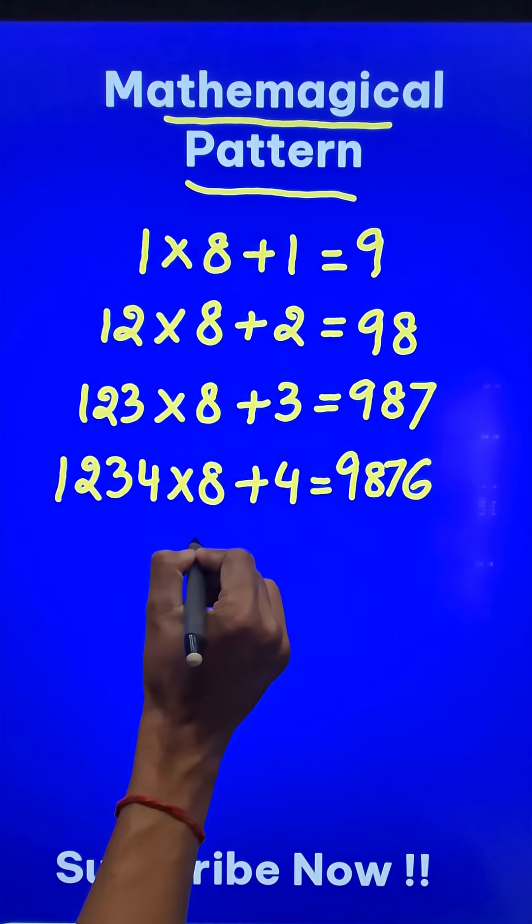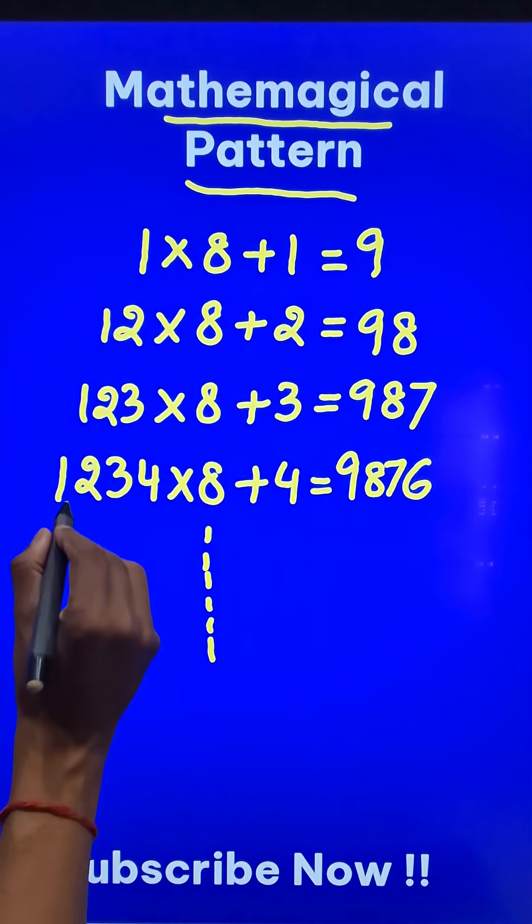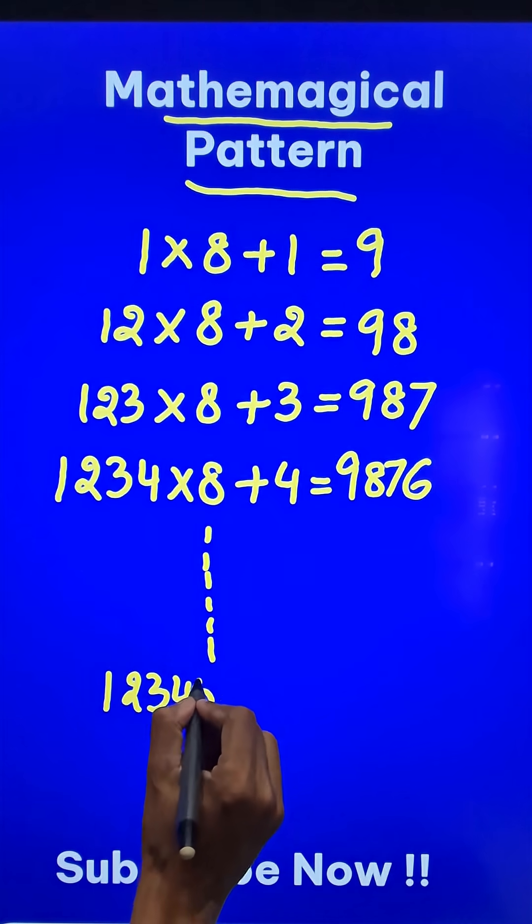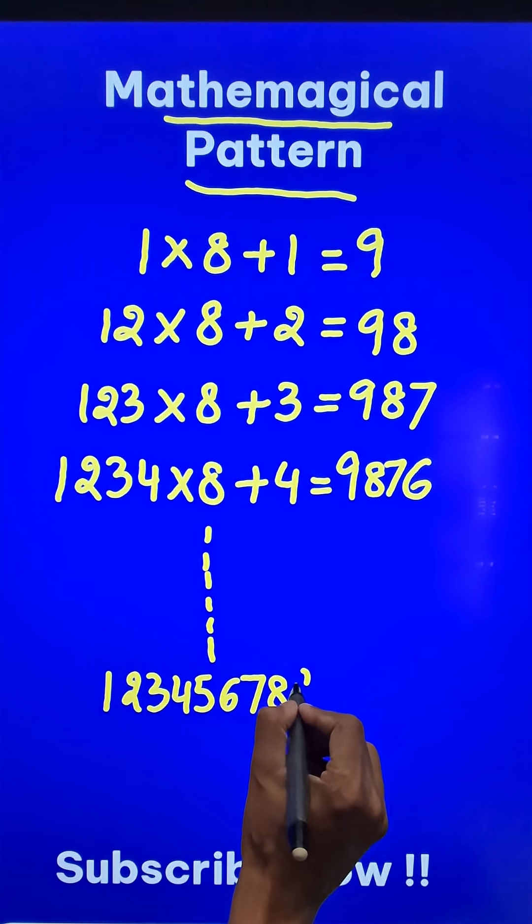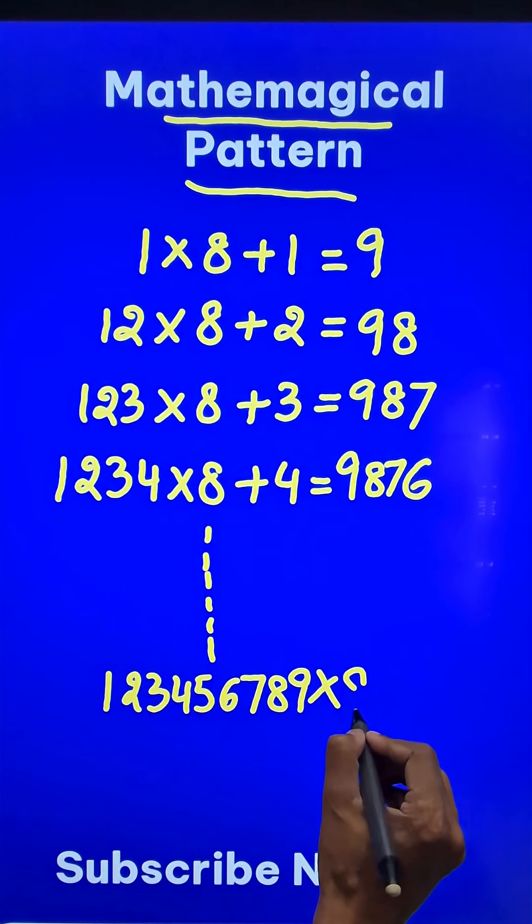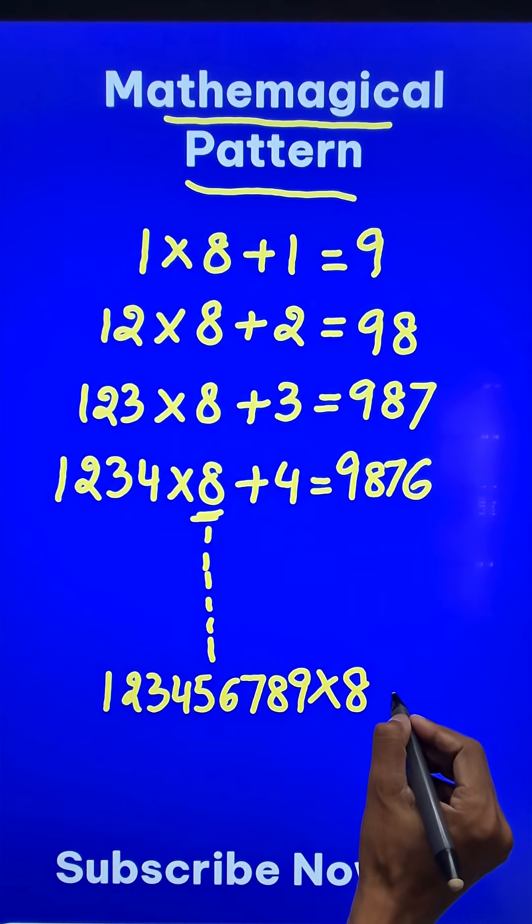And this pattern you can continue on and on up to the last digit. So this number becomes 1, 2, 3, 4, 5, 6, 7, 8, 9. So I have written all 9 digits. Multiply that by 8 again, the same number. And the 4 becomes 9 this time. So add 9 to the result.